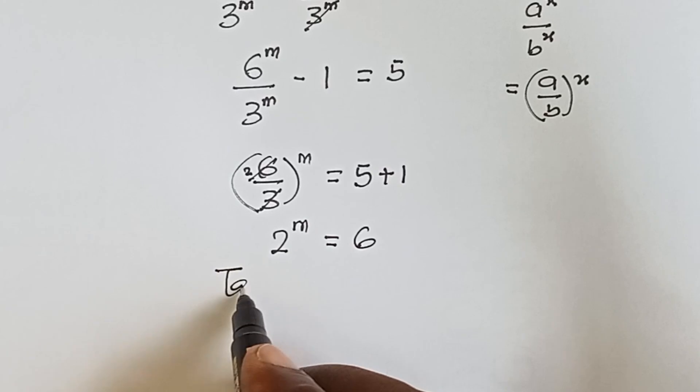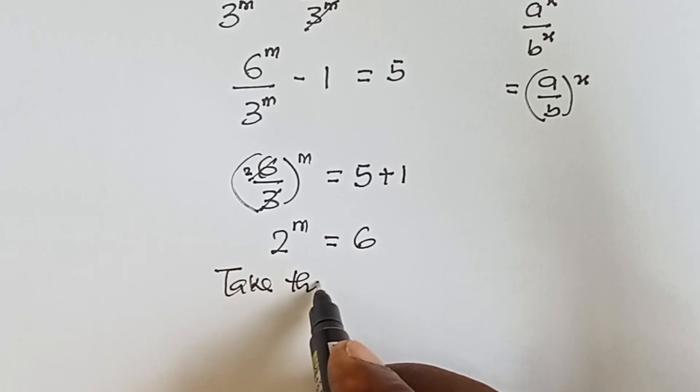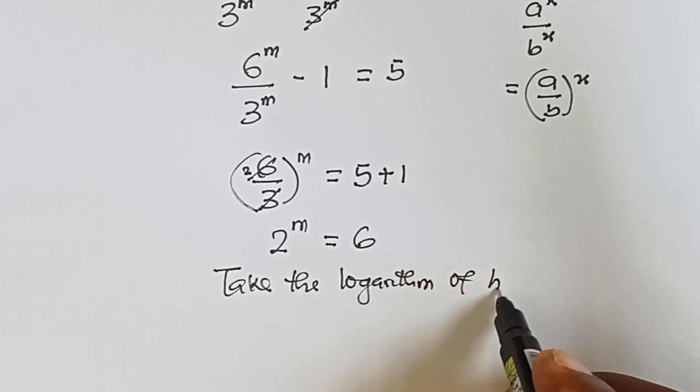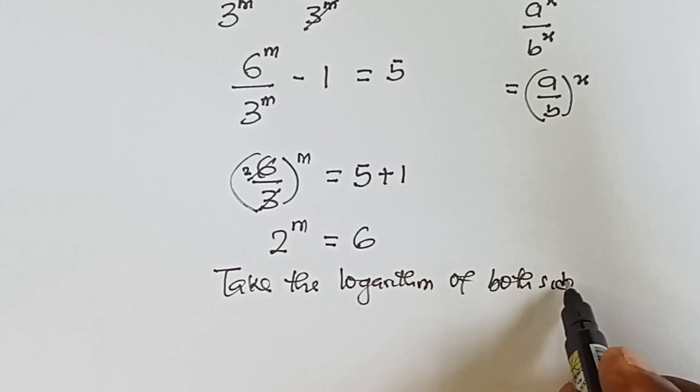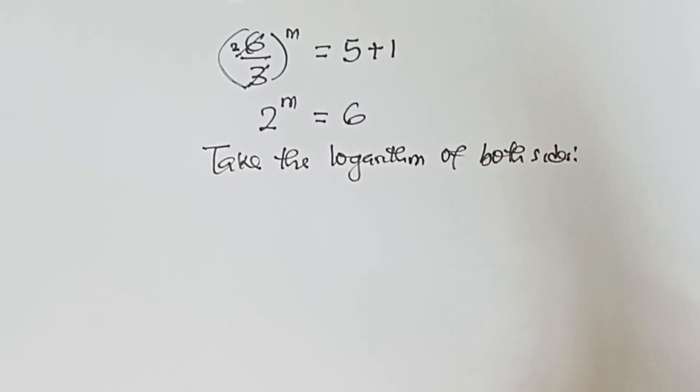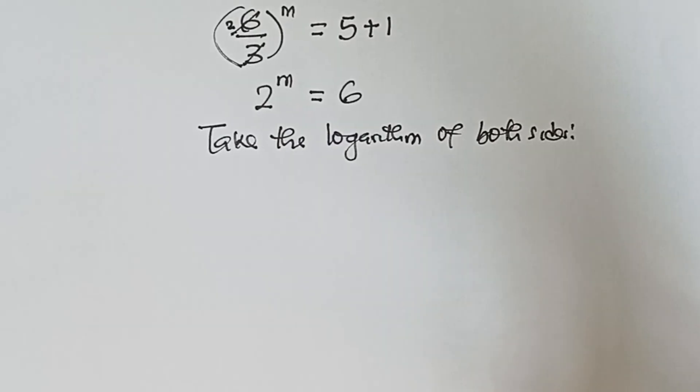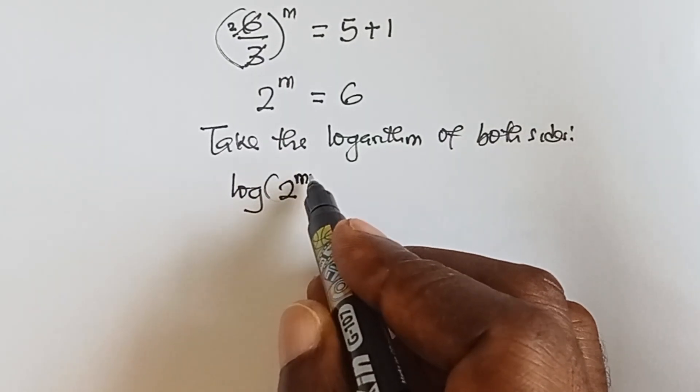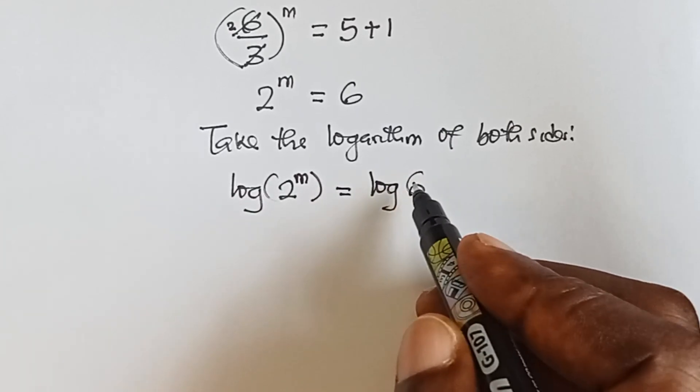Now let's take the log of both sides. When you take the log of both sides, this becomes log 2 raised to power m equals to log 6.